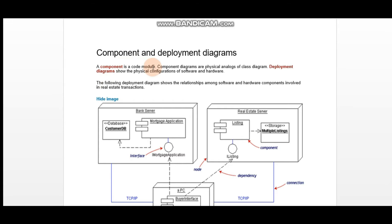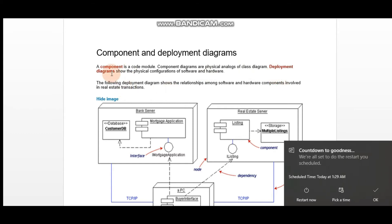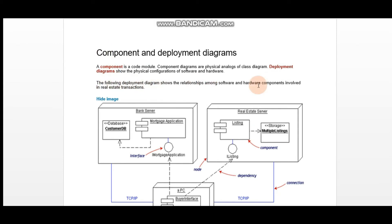A component is a code module. A component diagram is basically a class diagram's physical analog. A class diagram has some physical features, some physical analogs, which we call component diagrams, which show what the software and hardware physical configuration is. Deployment diagrams are basically showing us the physical configuration.